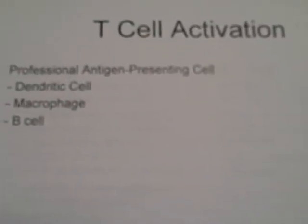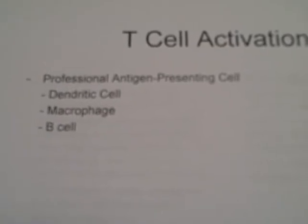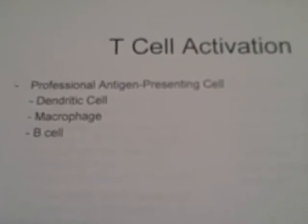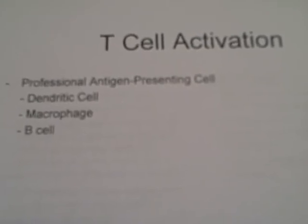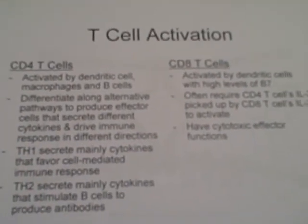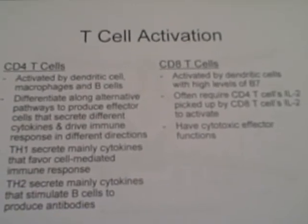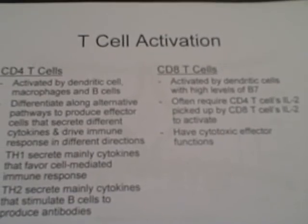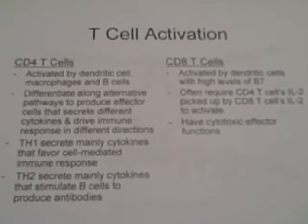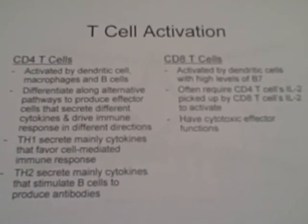T-cell activation requires antigen to be presented to the naive T-cell by a professional antigen-presenting cell. Professional antigen-presenting cells include dendritic cells, macrophages, and B-cells. Professional antigen-presenting cells express co-stimulating molecules that engage ligands on the T-cell surface. This interaction induces the production of the cytokine interleukin-2 by the T-cell, which is required for clonal expansion and differentiation. The same mechanisms are used to activate CD4 T-cells and CD8 T-cells, although CD8 T-cells require stronger co-stimulation and often receive help from CD4 cells. CD8 T-cells will have cytotoxic effector function.